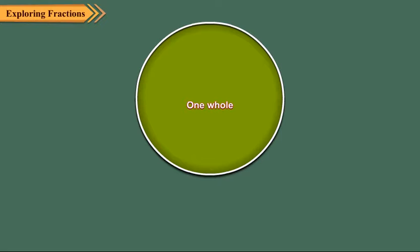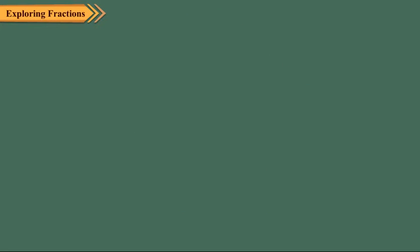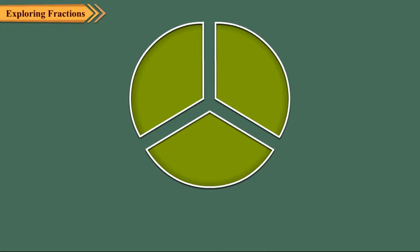Now, draw a circle and divide it into two equal parts. Clearly, each part represents one upon two. Now, draw a circle and divide it into three equal parts. Each part is one-third, that is, one upon three. Clearly, three one-thirds make a whole.